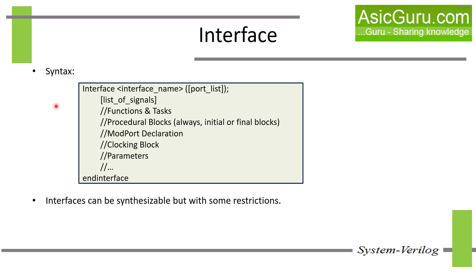Let's now look at the syntax of an interface in SystemVerilog. It starts with the 'interface' keyword and ends with the 'endinterface' keyword. It can include a variety of elements: at minimum it holds a list of signals like wires and logic variables, just like in a module. It can also include functions and tasks for reusable behavior, and procedural blocks like always, initial and final blocks. It can have modport declarations which define directions of signals, and clocking blocks which specify timing control in test benches. It can also have parameters — constants that configure signal widths and types. Interfaces are synthesizable, but certain constructs like initial blocks or delays may limit synthesis compatibility.